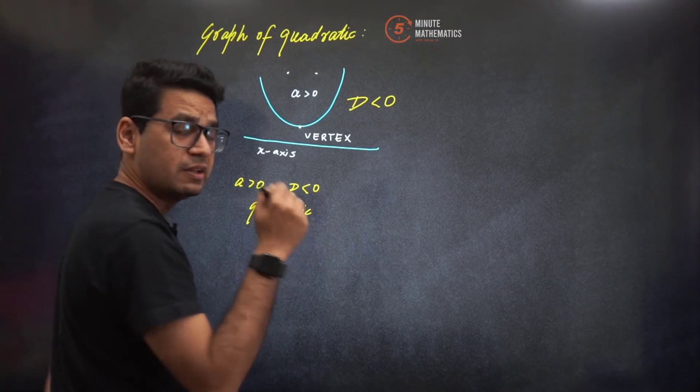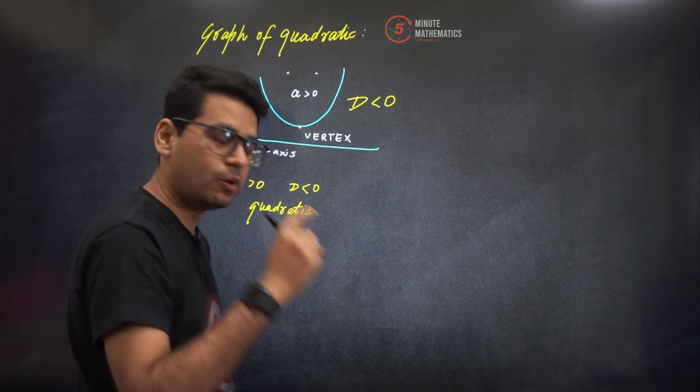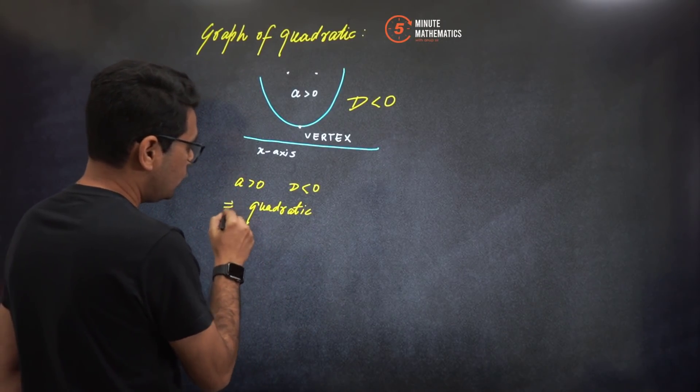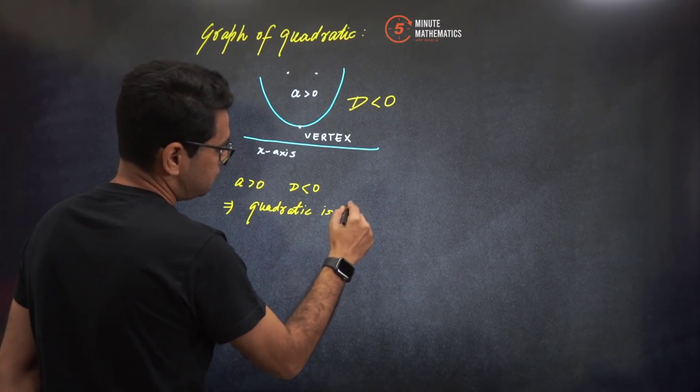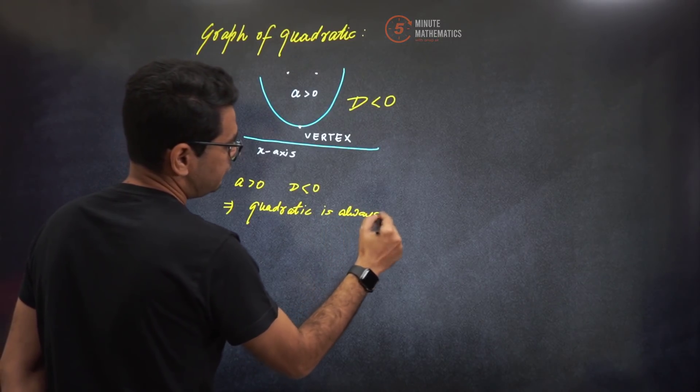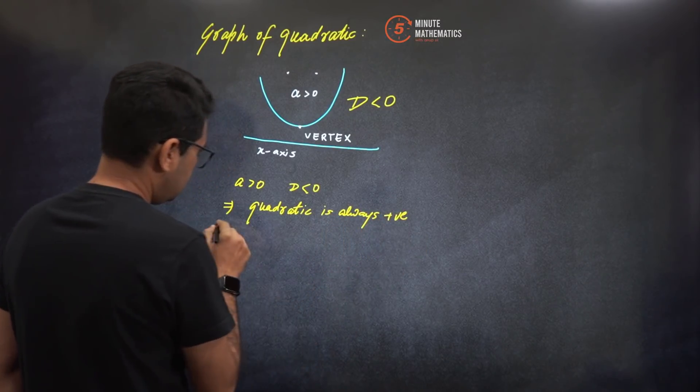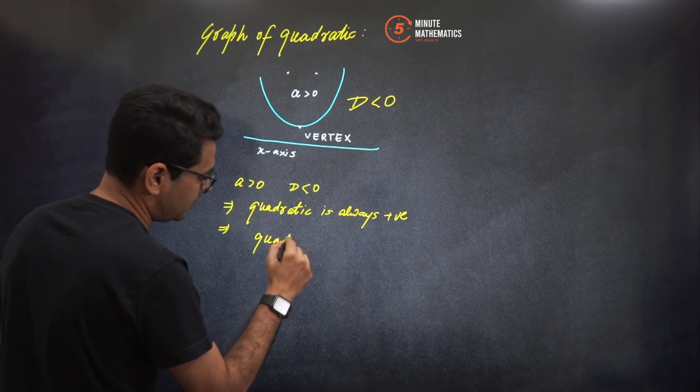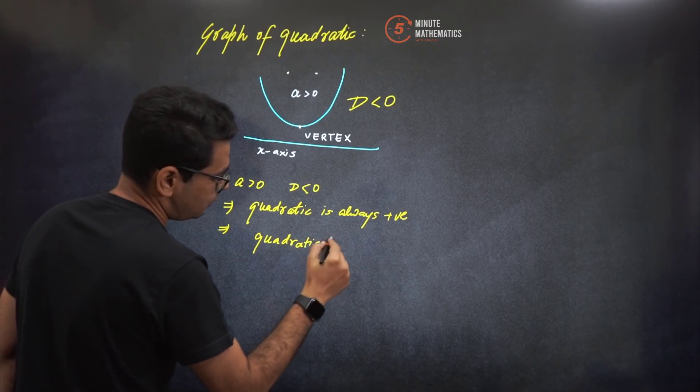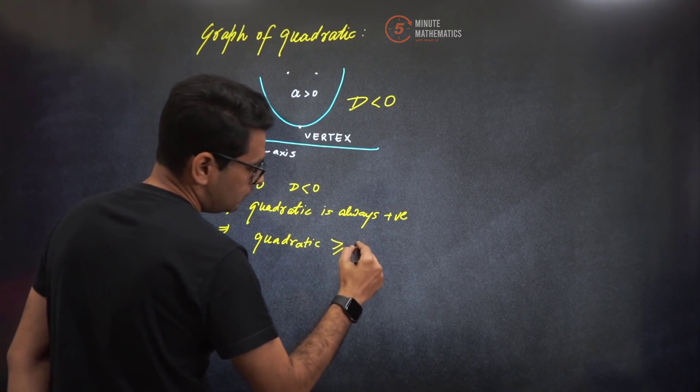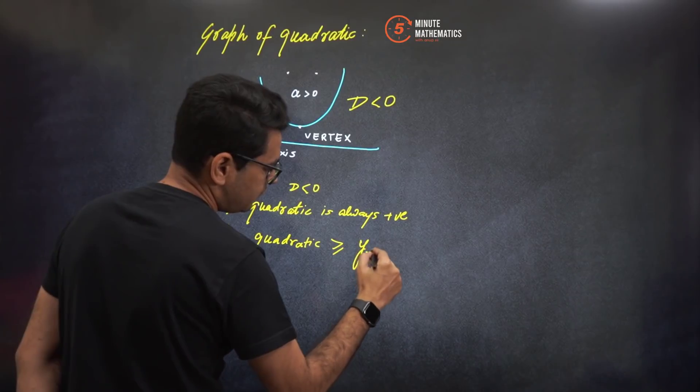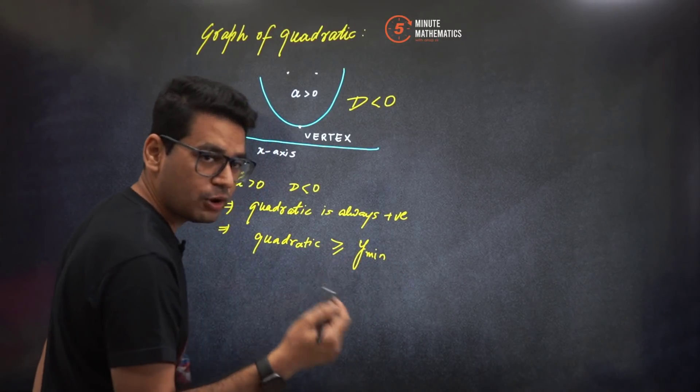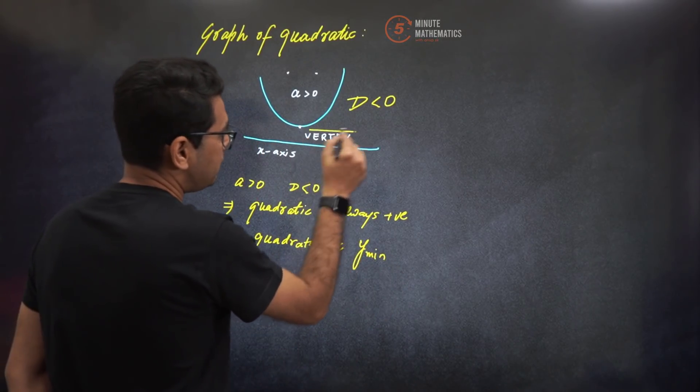And this particular concept is tested very very frequently in all competitive examinations. So the quadratic is always positive - first point. Second point: its minimum value. The quadratic is always positive as well as the fact you can say quadratic is always greater than or equal to y_min. What is y_min? That is the minimum value of y or the quadratic function which will happen at the vertex.